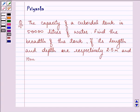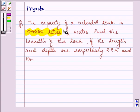Hello and how are you all today? The question says the capacity, that is, the volume of a cuboidal tank is 50,000 litres of water.